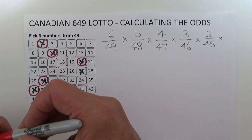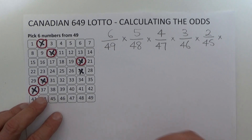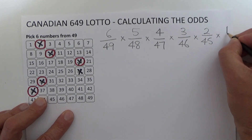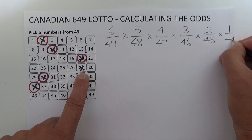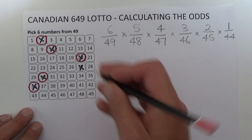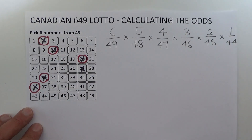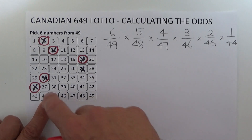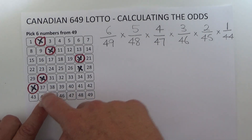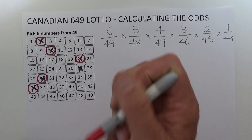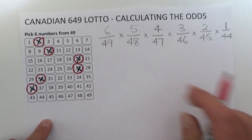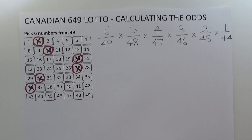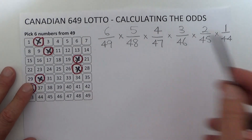When the final ball is drawn, you're left with one chance in 44 of matching it. You've got one unmarked number on your coupon, and five numbers have already been drawn, so there are 44 balls left in the barrel. I'll mark off that final number — and that gives us all the odds we need.